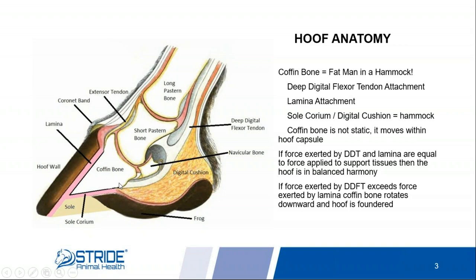That's a very important point to keep in mind. The deep digital flexor tendon attaches to P2, or the second phalanx bone, and runs right across the navicular bone. Horses with what we call navicular disease — when we say a horse is navicular — it's the interaction between that navicular bone and the deep digital flexor tendon which causes the heel pain that makes that horse navicular.